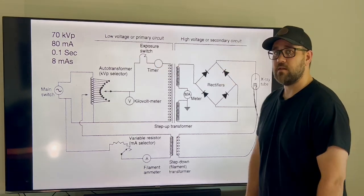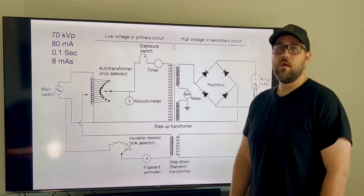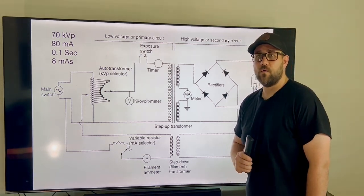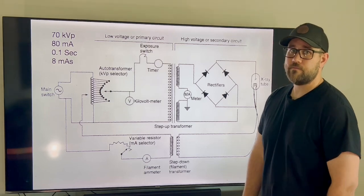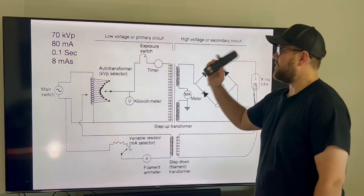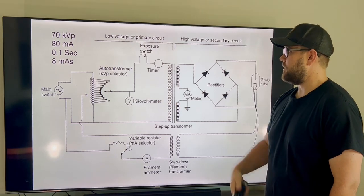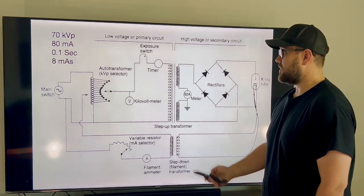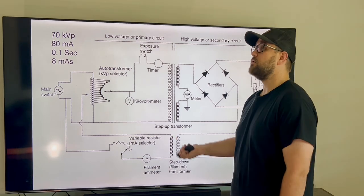Our technique that I'm going to be using today will be 70 kVp, 80 mA, 0.1 seconds, which in turn will be 8 mAs. Okay, so let's put that into our control panel for our x-ray, and then we'll start talking about what will start happening.